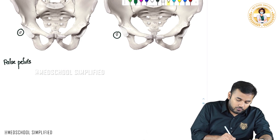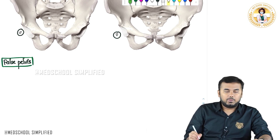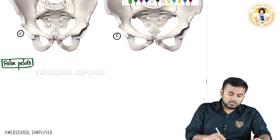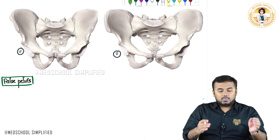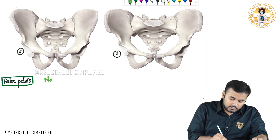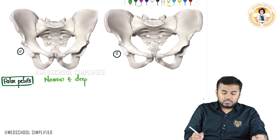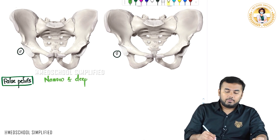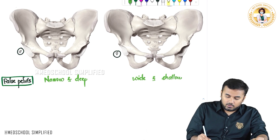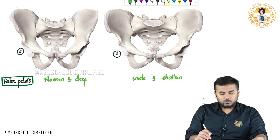How is the false pelvis in males compared to females? In case of males, the false pelvis is narrow and deep. In case of females, the false pelvis is wide and shallow.